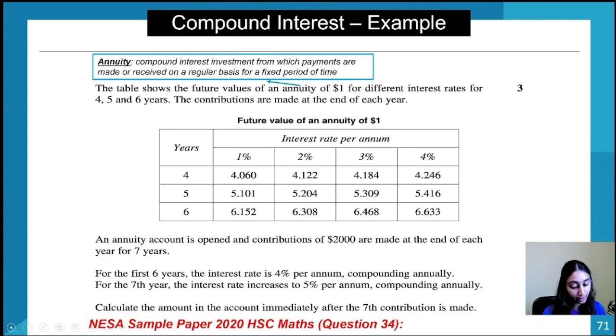For the first six years the interest rate is four percent per annum compounded annually. For the seventh year the interest rate increases to five percent per annum compounded annually. Calculate the amount in the account immediately after the seventh contribution is made. I'm going to give you a sec to do this one because it's definitely a tricky question.